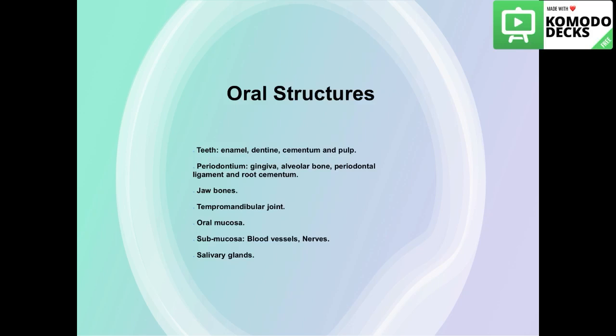Which oral structures are we going to discuss this semester? First, we will discuss the tissues of the teeth: the enamel, the dentine, the cementum, and the pulp. Then we will move to the tooth supporting system, the periodontium, which is composed of the gingiva, the alveolar bone, the periodontal ligament, and the root cementum.